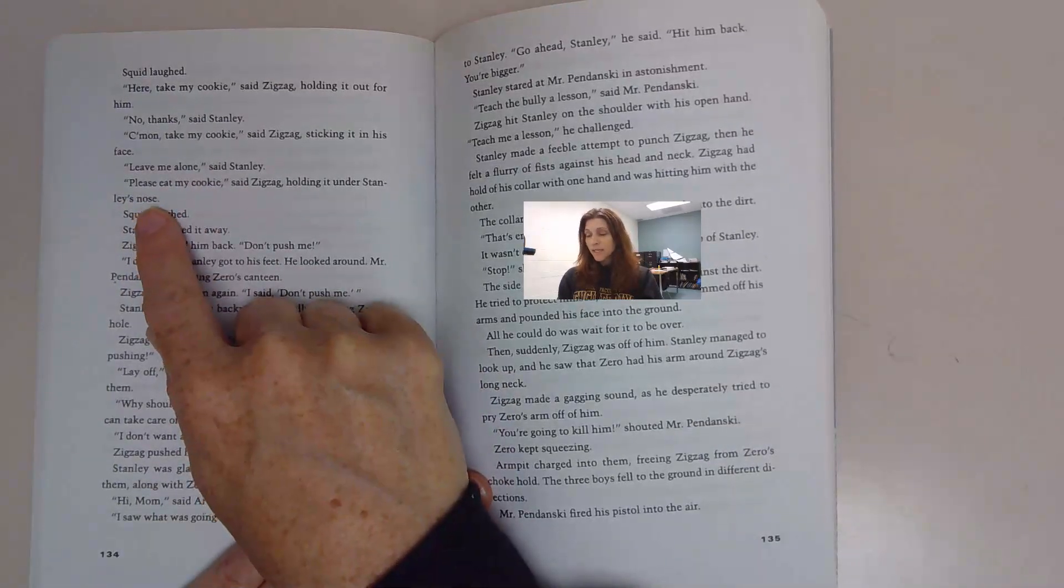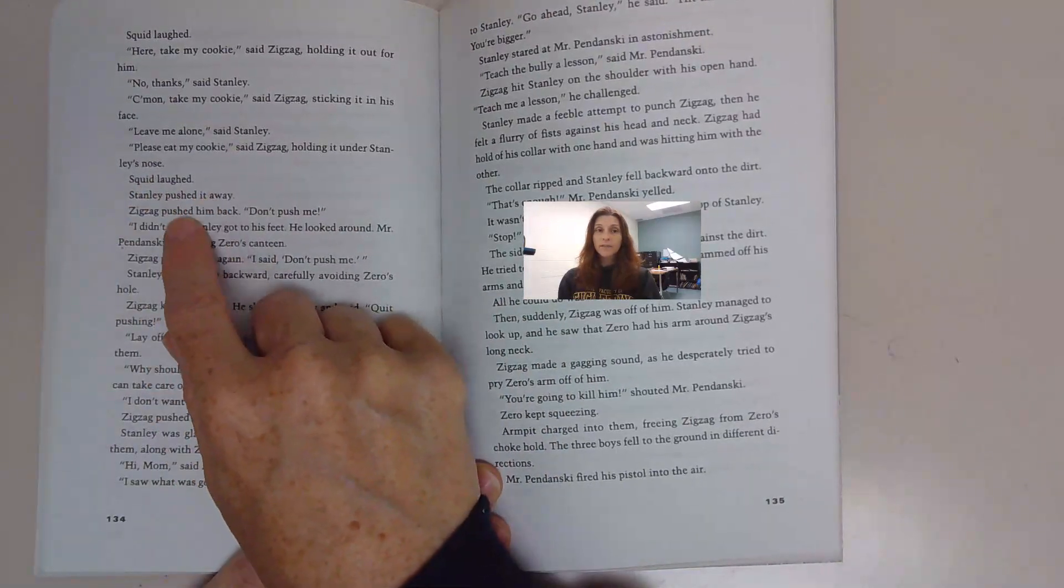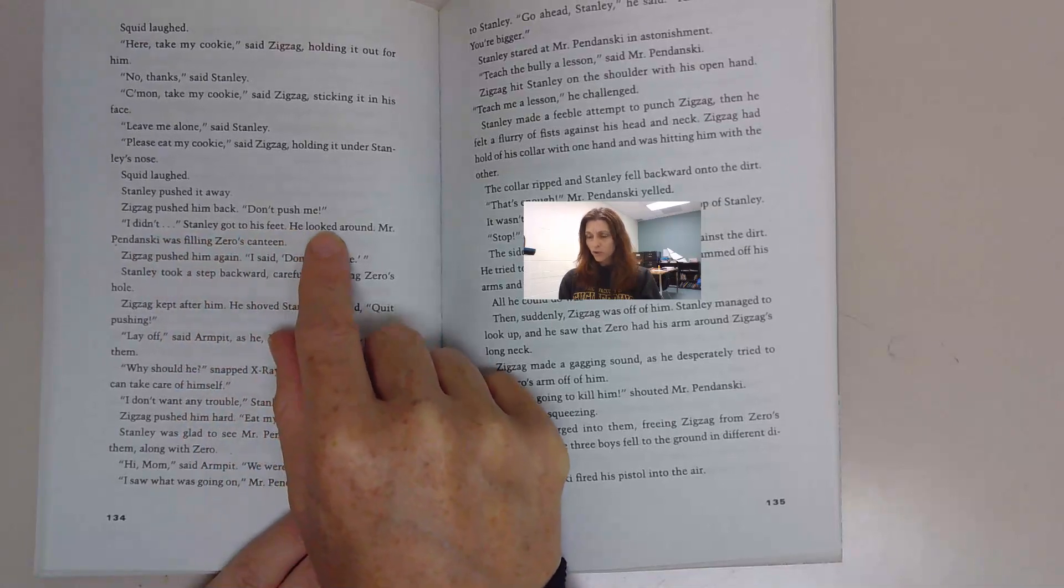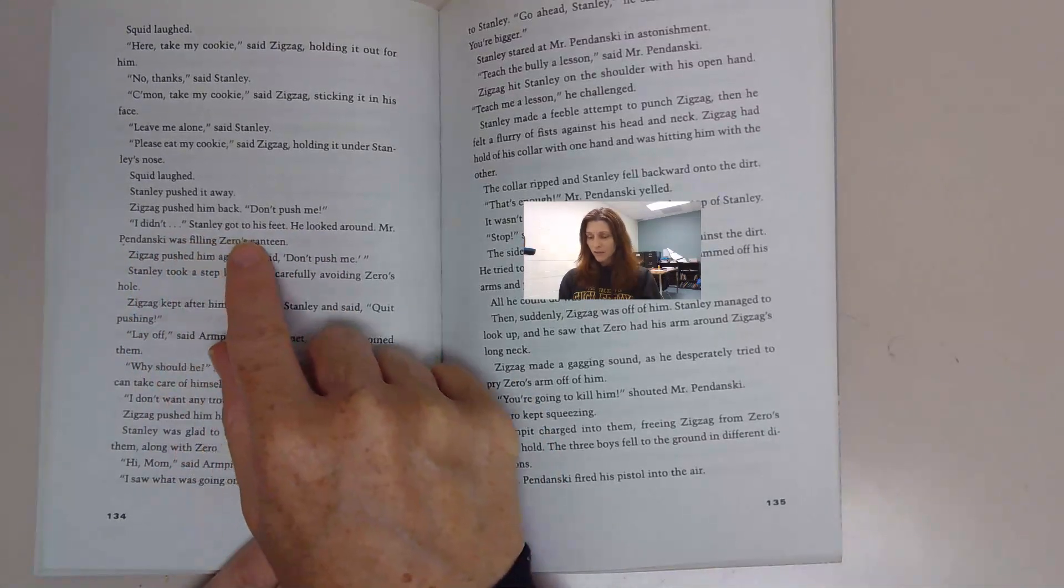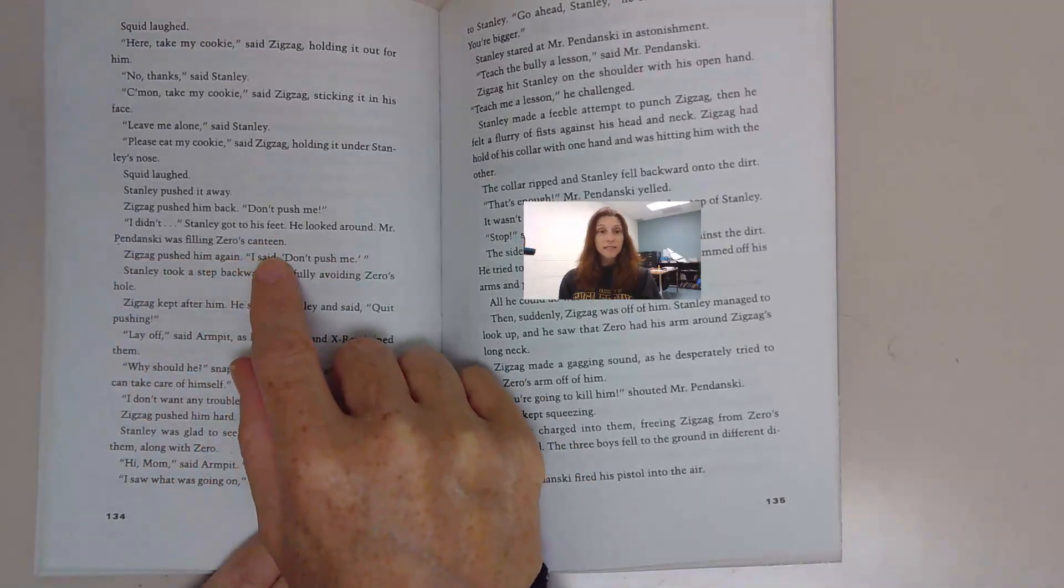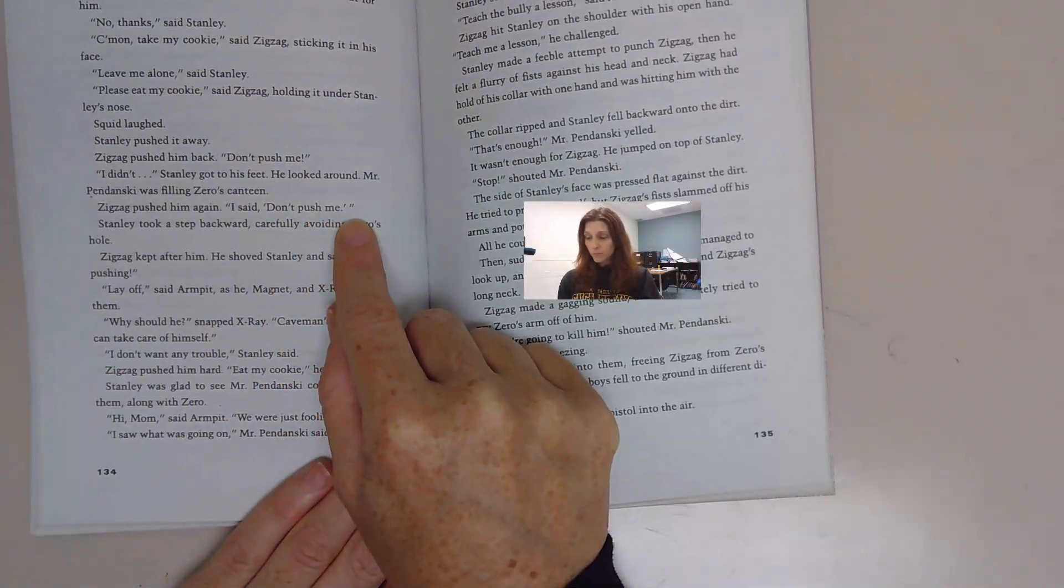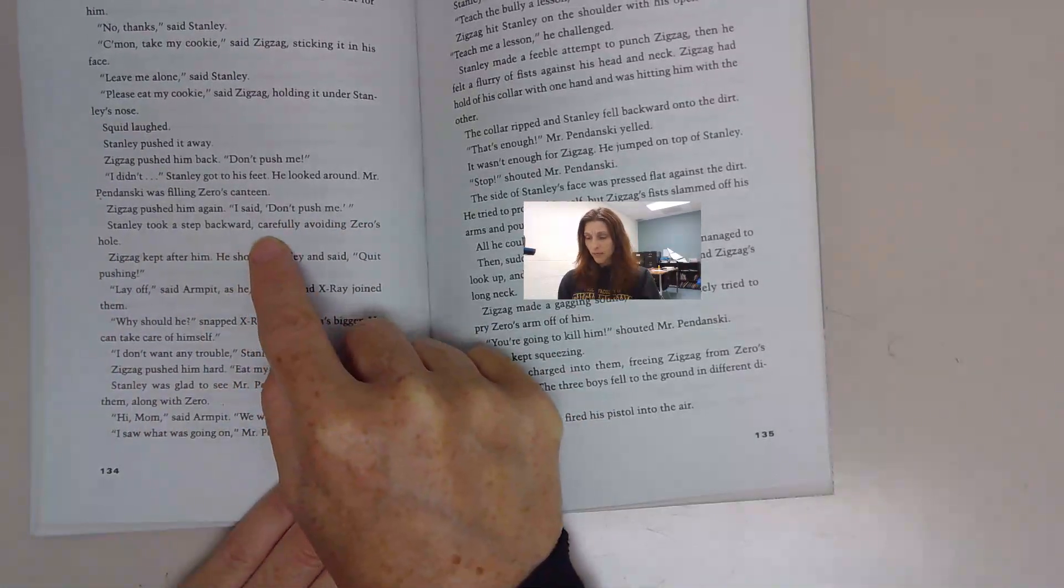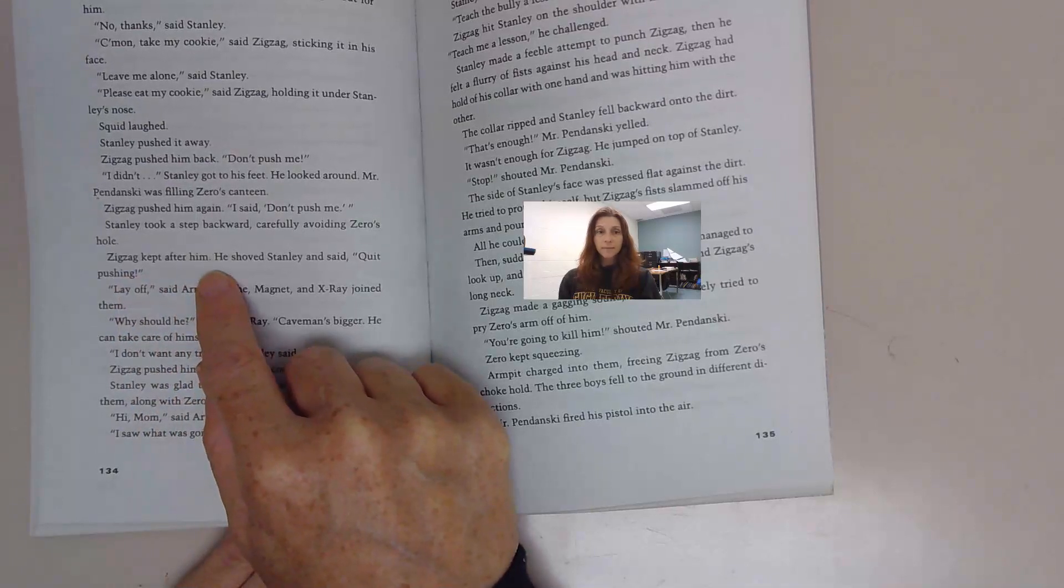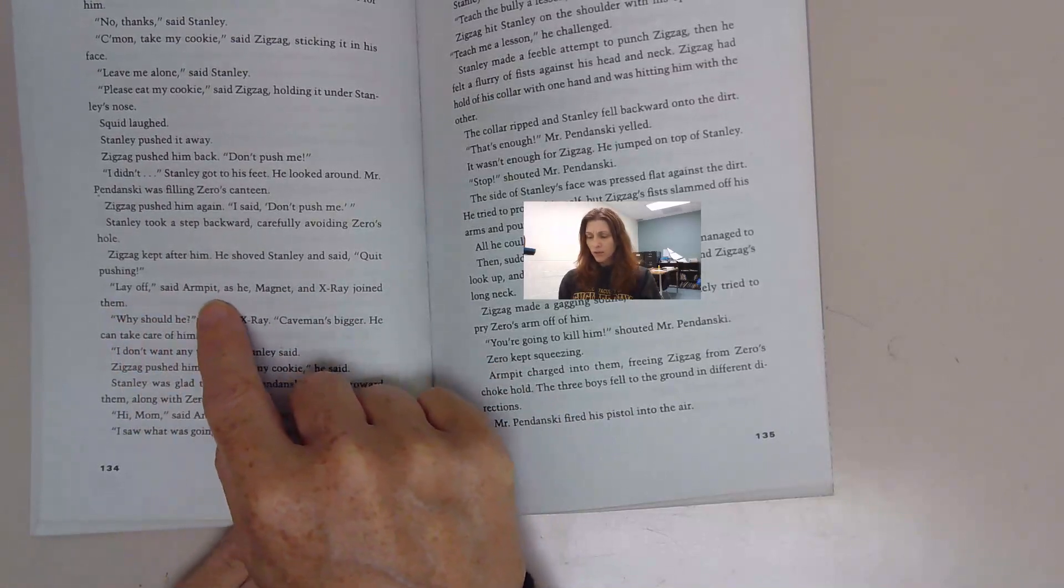Leave me alone, said Stanley. Please eat my cookie, said Zigzag, holding it under Stanley's nose. Stanley pushed it away. Zigzag pushed him back. Don't push me. I didn't. Stanley got to his feet. Zigzag pushed him again. I said, don't push me. Stanley took a step backward, carefully avoiding Zero's hole. Zigzag kept after him. Lay off, said Armpit.